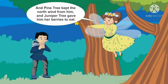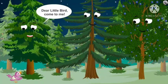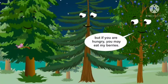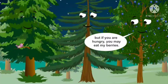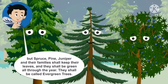Jack Frost understood what the Forest Fairy was about to request. He told that such kindness should be rewarded. The kindness being discussed is the kindness shown by the Spruce Tree, Juniper Tree, and Pine Tree to the little bird — the Spruce Tree gave shelter, the Pine Tree protected from the north wind, and the Juniper Tree gave berries to eat. These trees were rewarded so that their leaves will never fall off even in winter season.